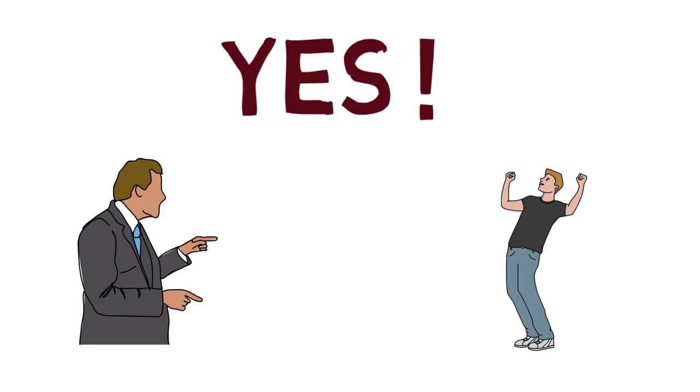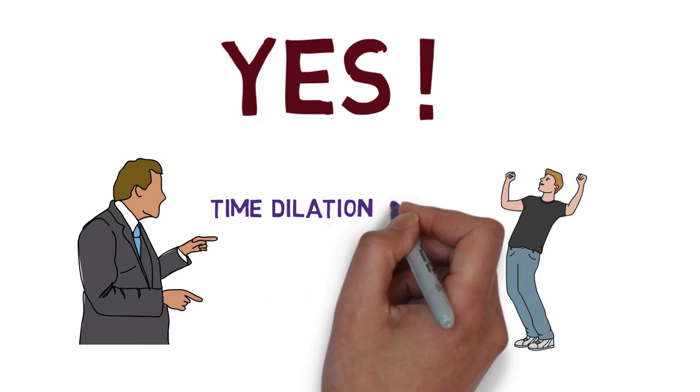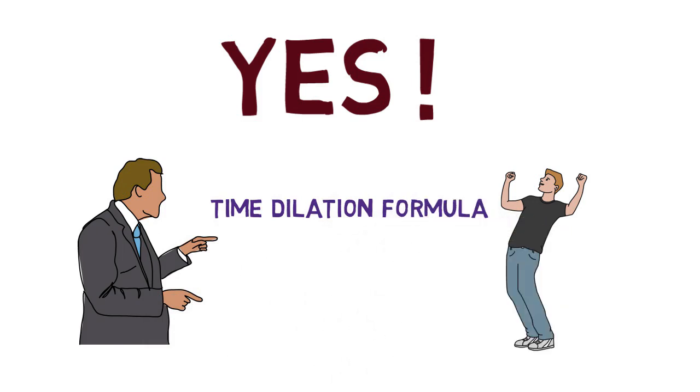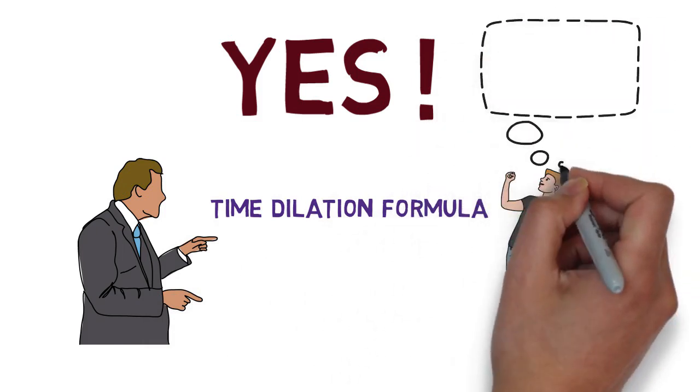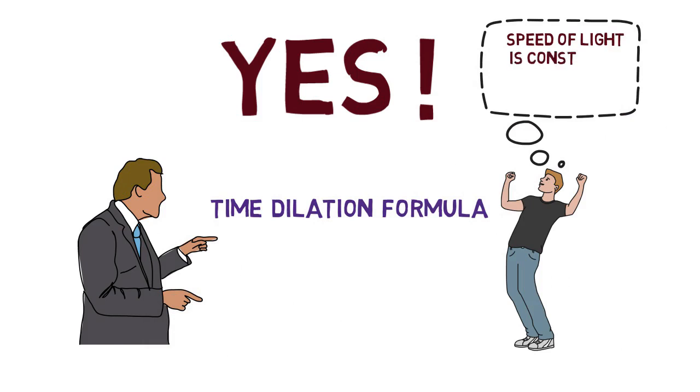For example, let us say you need to derive the time dilation formula. For that you just need this thought that the speed of light is constant in every frame of reference. With this and all the basics you need like transformations of coordinates, you can derive this time dilation formula very easily.